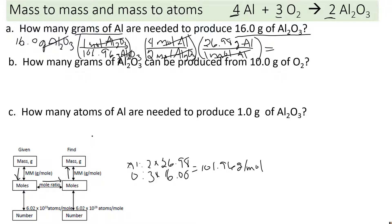Going to the calculator: 16 divided by 101.96, times 4 divided by 2, times 26.98 equals — rounding to three significant figures — 8.47 grams of aluminum. And that's the answer.